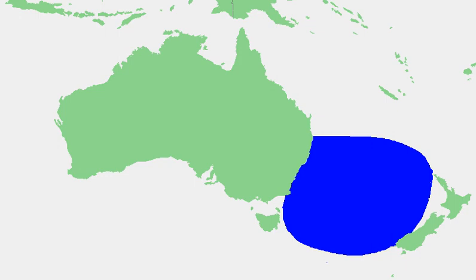The Tasman Sea is a marginal sea of the South Pacific Ocean, situated between Australia and New Zealand. It measures about 2,000 km across and about 2,800 km from north to south. The sea was named after the Dutch explorer Abel Janzoon Tasman, who was the first recorded European to encounter New Zealand and Tasmania. The British explorer Captain James Cook later extensively navigated the Tasman Sea in the 1770s as part of his first voyage of exploration.